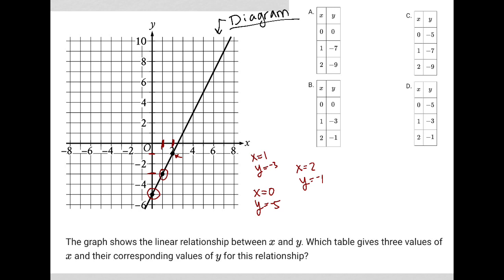The question goes on to say the graph shows the linear relationship between x and y. Which table gives three values of x and their corresponding values of y for this relationship? In essence, I have these ordered pairs that I can just plug into each answer choice to determine whether that answer choice is correct.